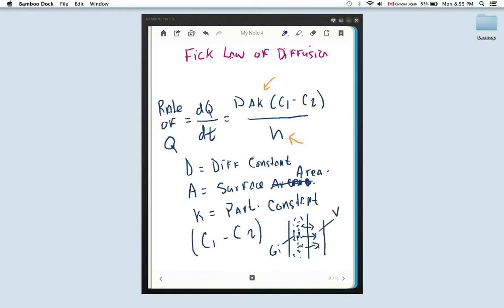These are all things that increase the rate of diffusion, and then H is simply the thickness of the membrane. The thickness of the membrane, and as H increases, diffusion is going to decrease.